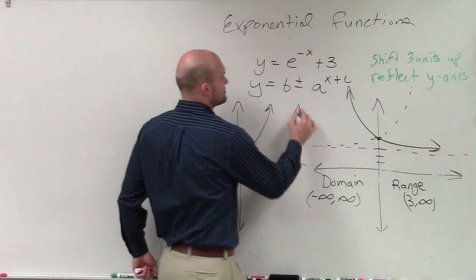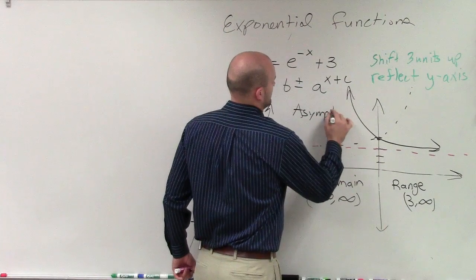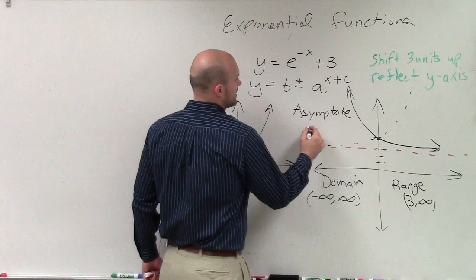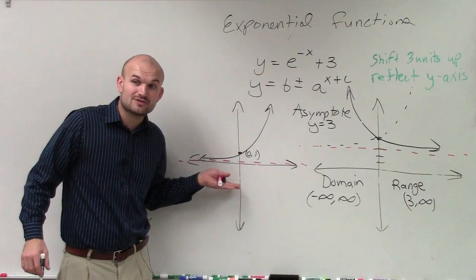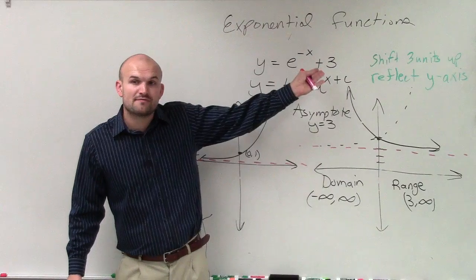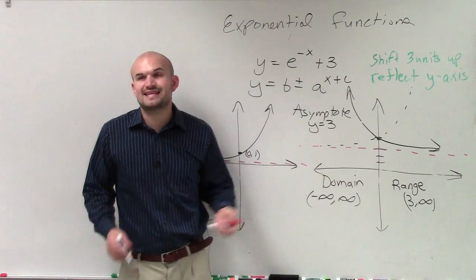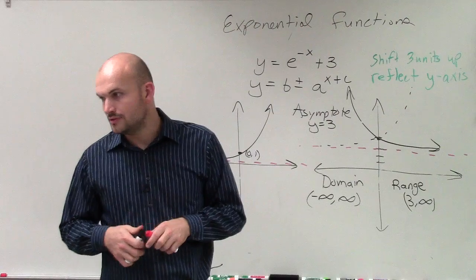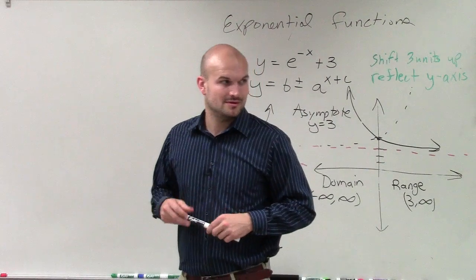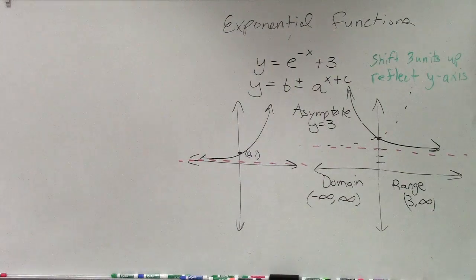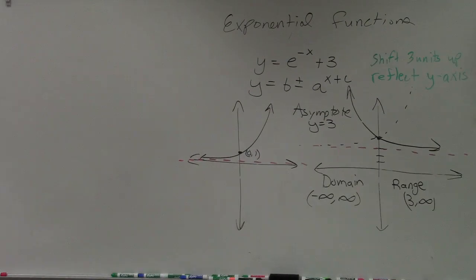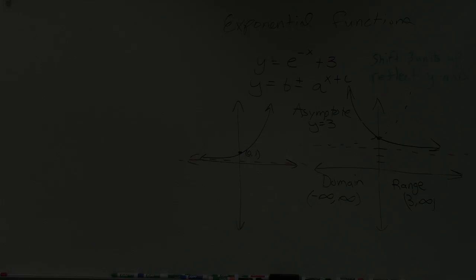And our asymptote, a lot of times you can write that down, is going to be at y equals 3. The asymptote over here is y equals 0. But since we shifted the graph three units up, the asymptote is now at y equals 3. Cool? No? Excited? OK. Man, you guys are boring. You guys want to try one?